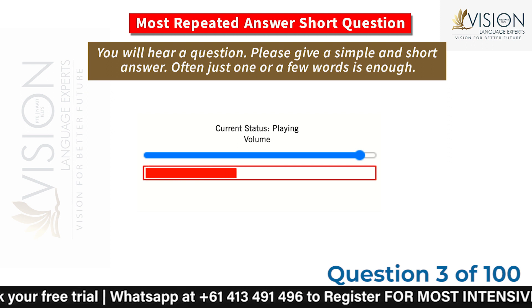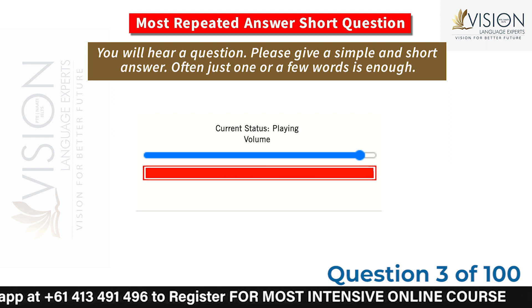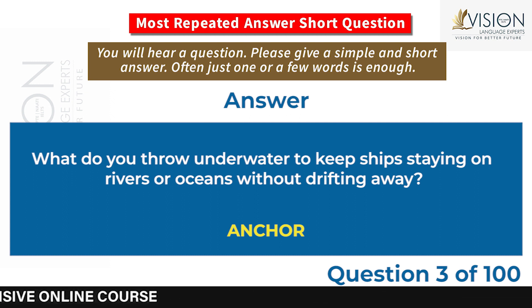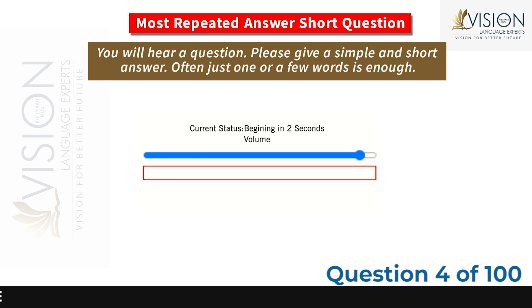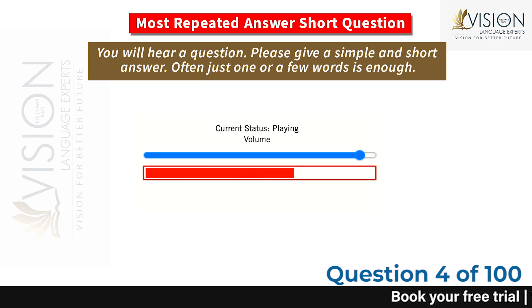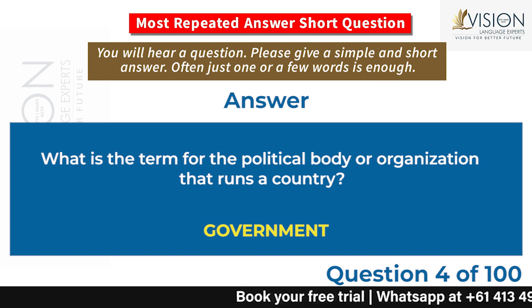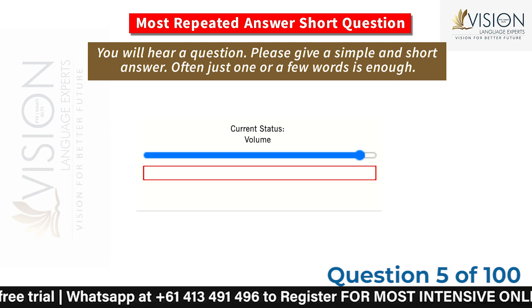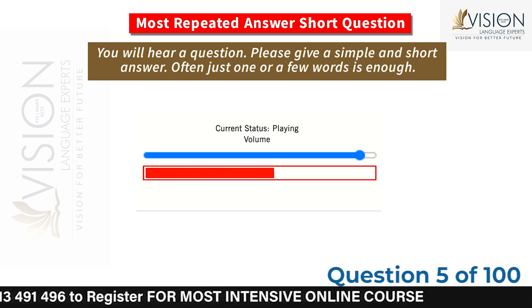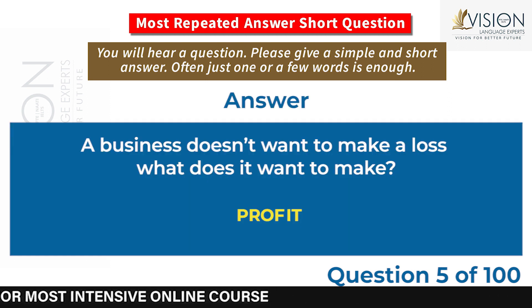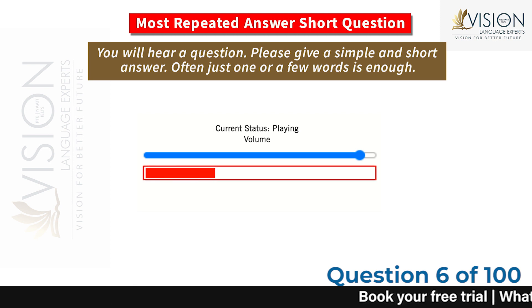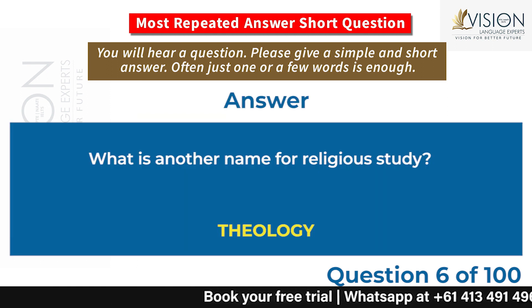What do you throw underwater to keep ships staying on rivers or oceans without drifting away? Anchor. What is the term for the political body or organization that runs a country? Government. A business doesn't want to make a loss — what does it want to make? Profit. What is another name for religious study? Theology.